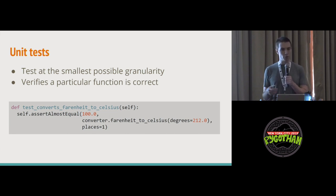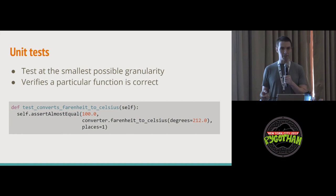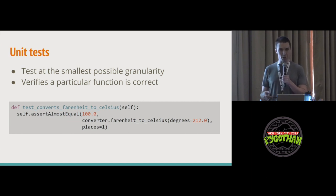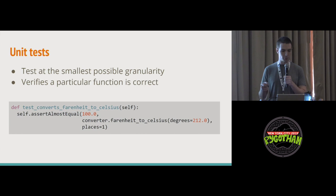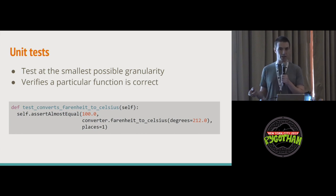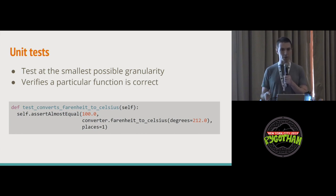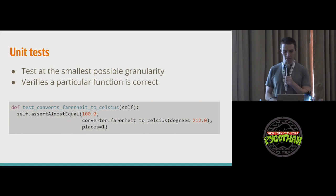If you were modifying that Fahrenheit to Celsius function, you would run these unit tests to make sure that you haven't broken behavior. Because if you ever run this function and you don't get 100 degrees Celsius, you know that you've either broken your code or something radical has happened in standards and measurements.